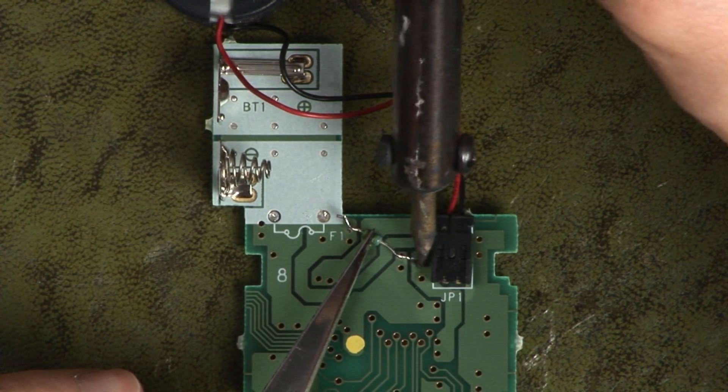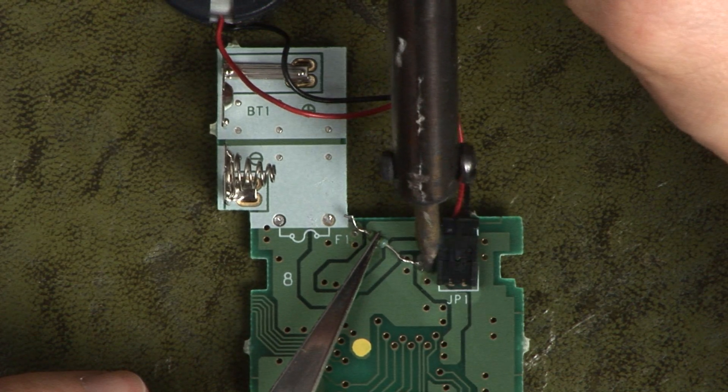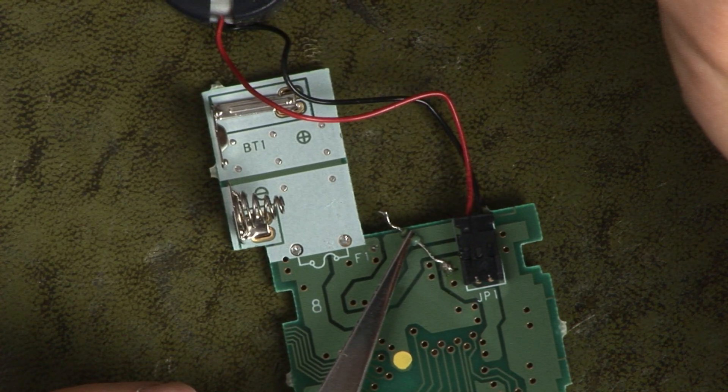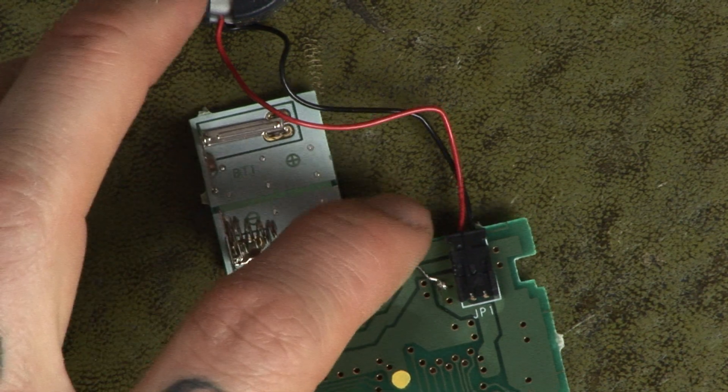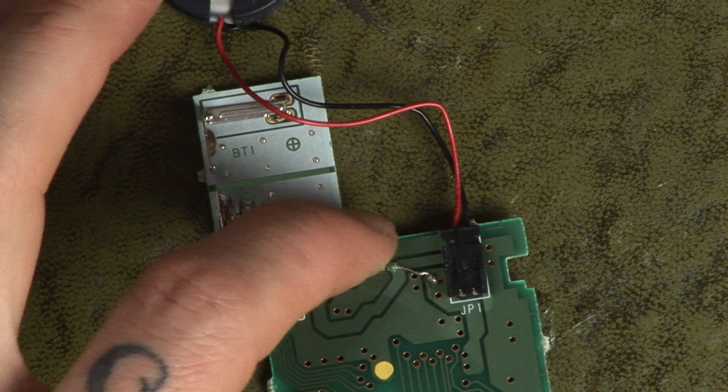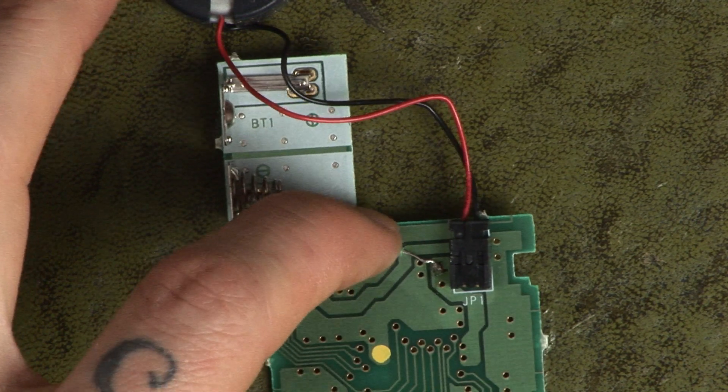You can solder whichever lead you choose first. This is the order I chose to solder it in. It won't make any difference if you solder the other lead first. Bend your resistor into place to cover the remaining hole, then solder the resistor to the board.